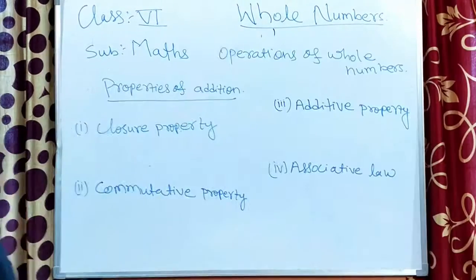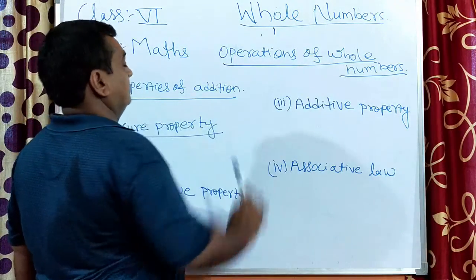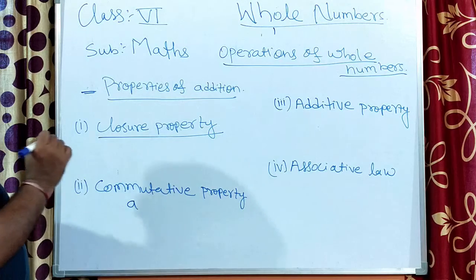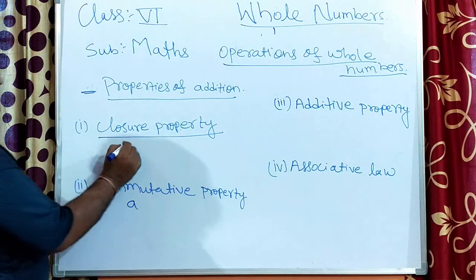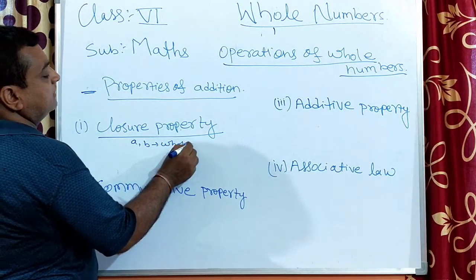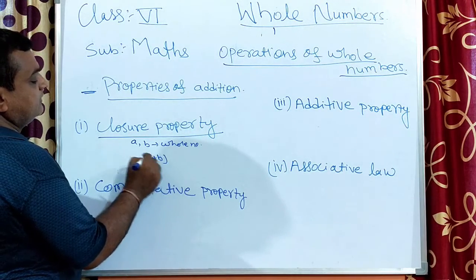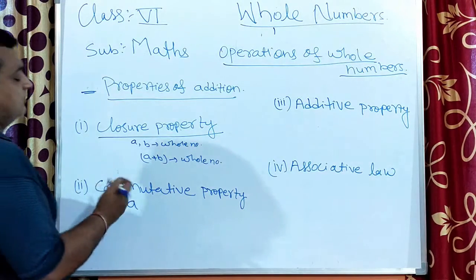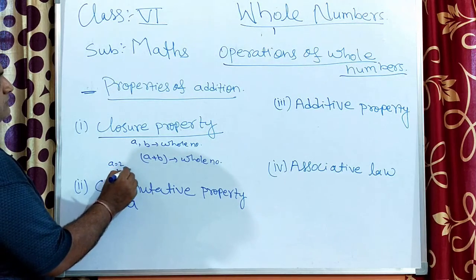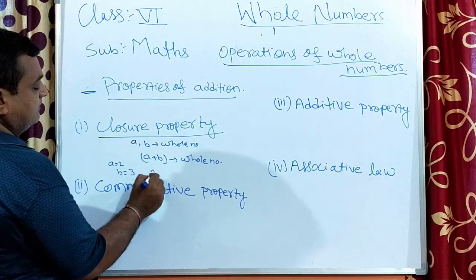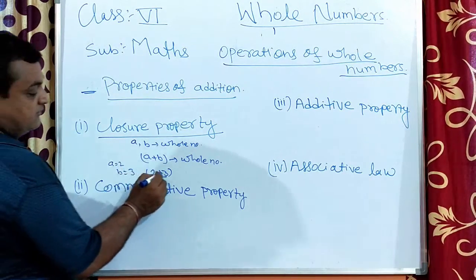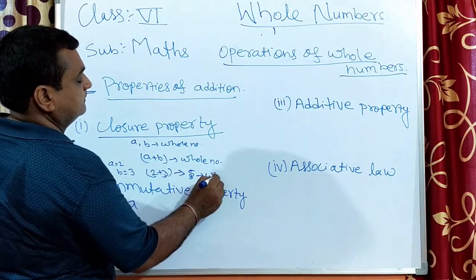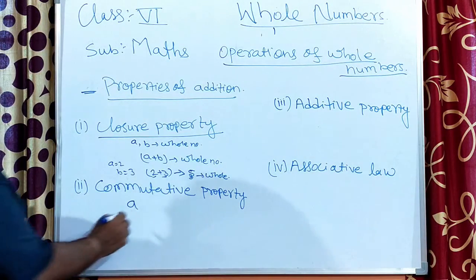We will now study operations of whole numbers — the properties of addition. The first property is the closure property. If a and b are whole numbers, then when we add two whole numbers the result will also be a whole number. For example, a equals two, b equals three. Two plus three equals five, and five is also a whole number.